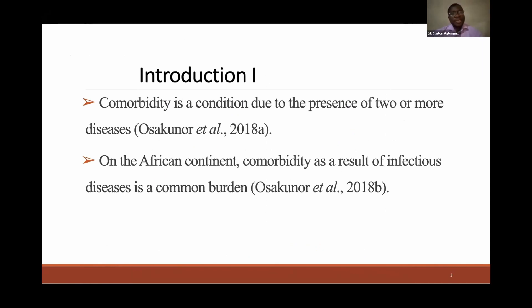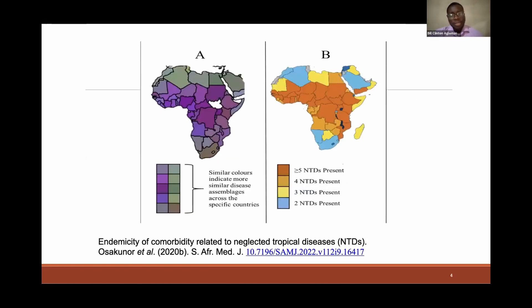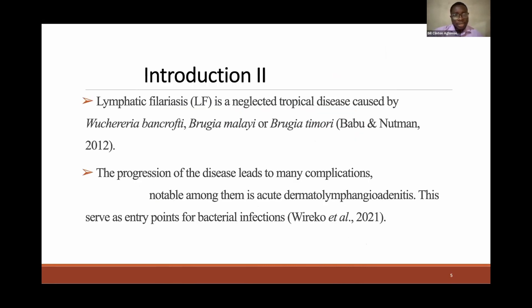Comorbidity is a condition due to the presence of two or more diseases. On the African continent, comorbidity mostly results from infectious diseases. This comorbidity also occurs in other parts of the world in non-infectious disease as well. On the African continent, one of the causes is neglected tropical diseases — diseases that are less researched upon and mostly infectious. From this picture, you can see clearly that on the African continent, two or more neglected diseases are probably implicated in many countries, and one of those is lymphatic filariasis.